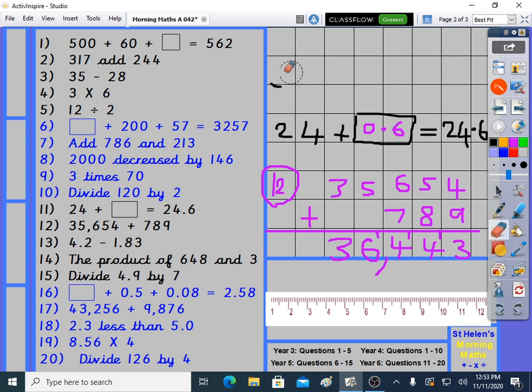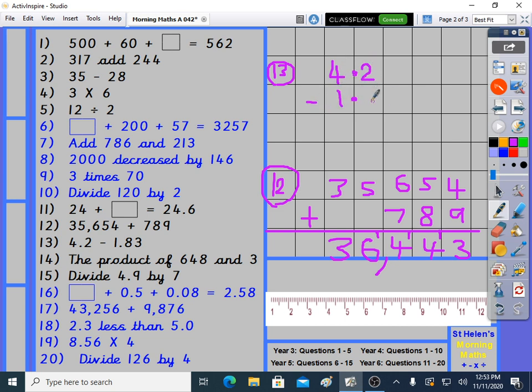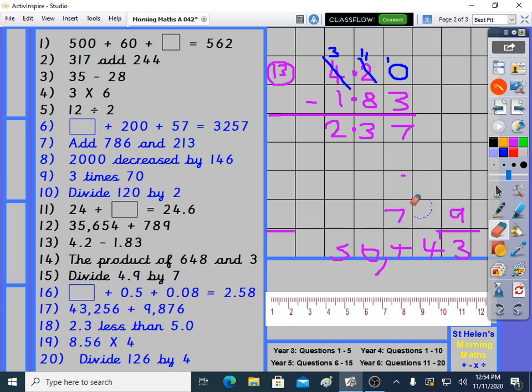We'll go to question 13 at the top. Question 13: 4.2 minus 1.83. Now there's something very important you have to do to make this work. 4.2 minus 1.83. This won't work unless you place a 0 on the top line, so don't forget to place a 0 on the top line. 0 take away 3 we can't do, we need some help from here. 10 take away 3 is 7. 1 take away 8 we can't do, we'll need some help from here. Goes down to a 3. 11 take away 8 is 3. 3 take away 1 is 2. It's not 237 is it, it's 2.37, so don't forget your decimal point. 4 and a bit take away 1 and a bit ended up being 2 and a bit.